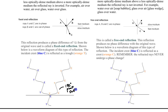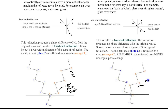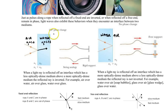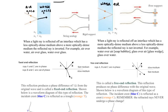A 180-degree phase shift means the wave is now off by a half wavelength. In contrast, a reflection with no phase shift keeps the pattern aligned — crest, trough, crest, trough — with no half-wavelength offset. Remember: less dense to more dense gives a phase change; more dense to less dense gives no phase change.